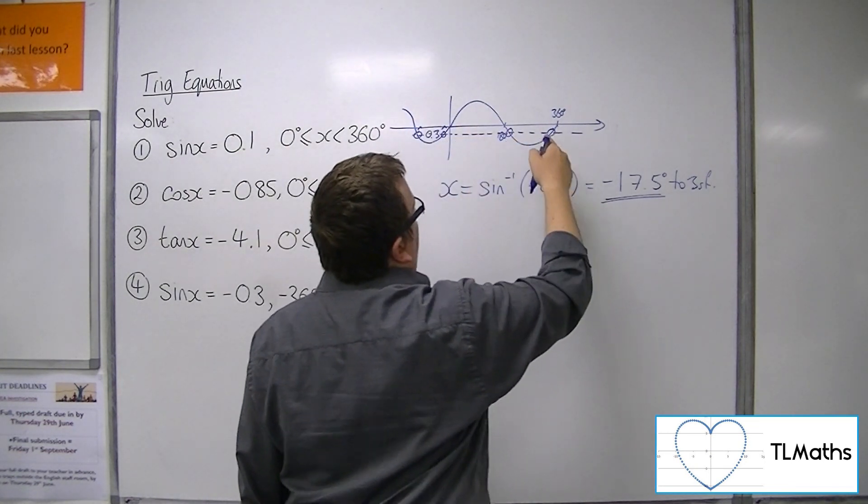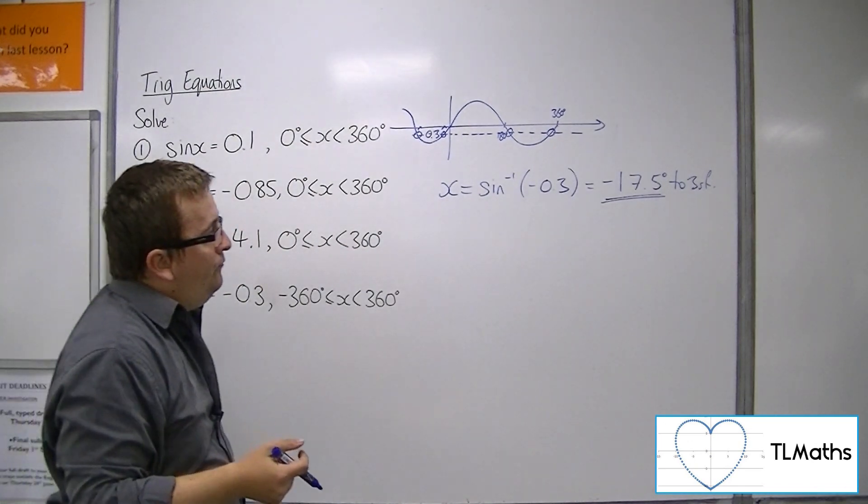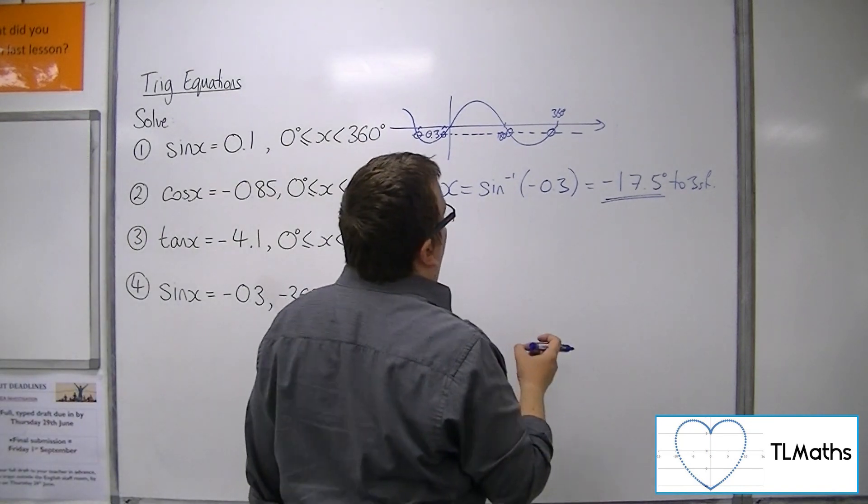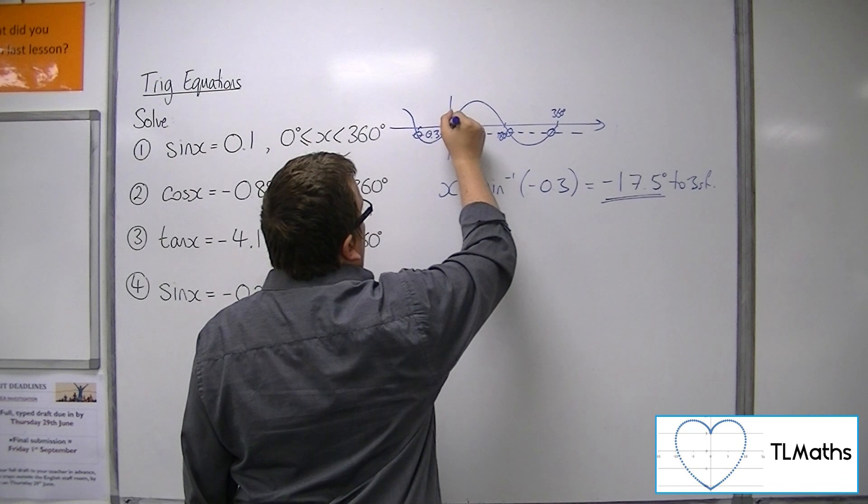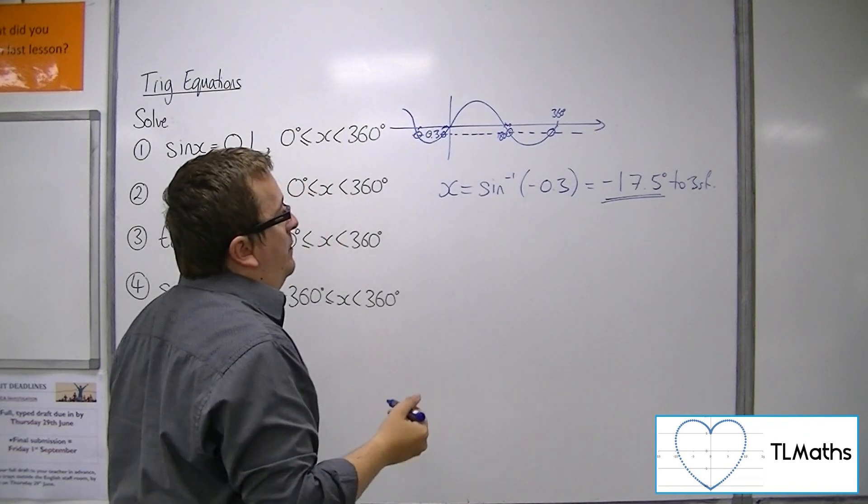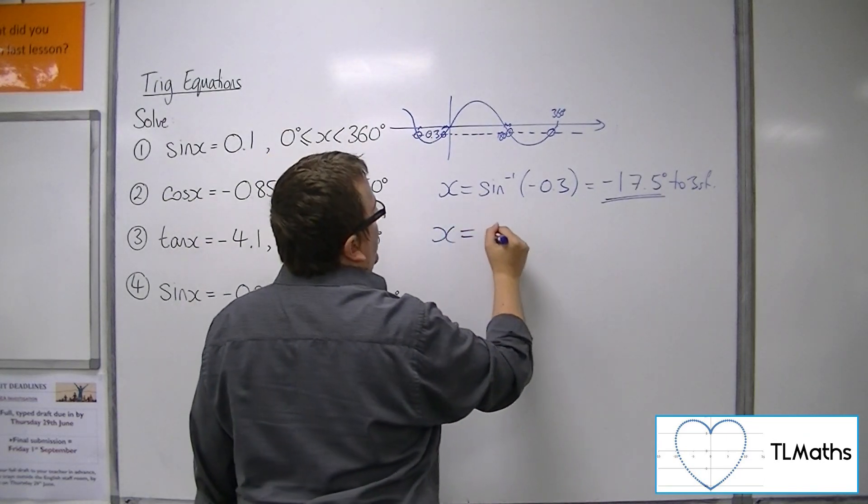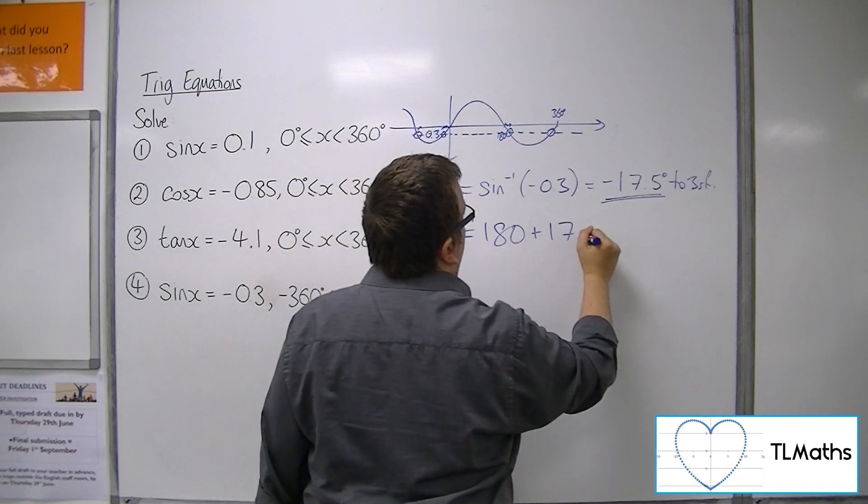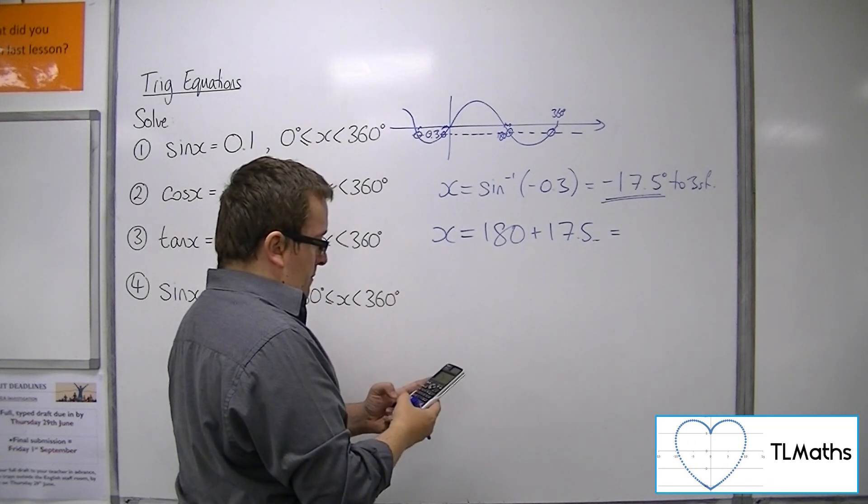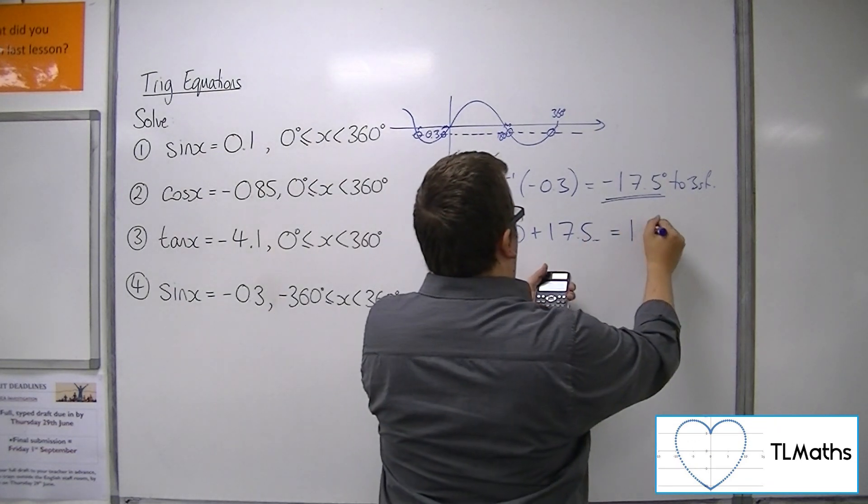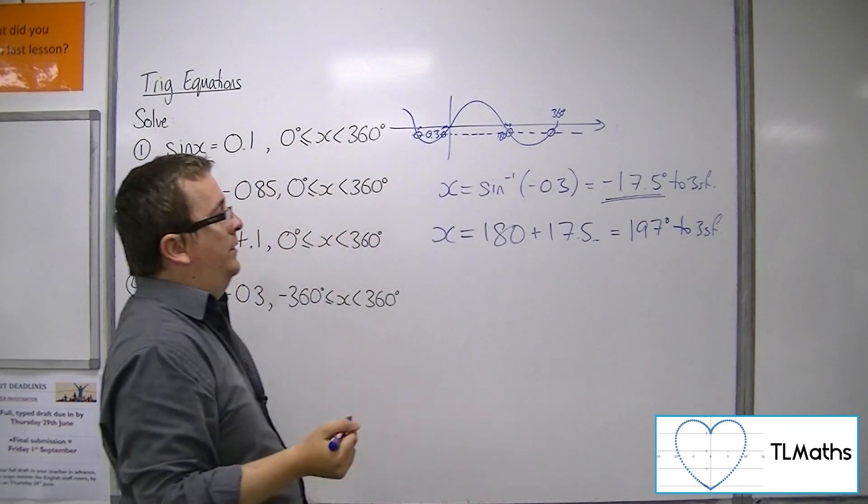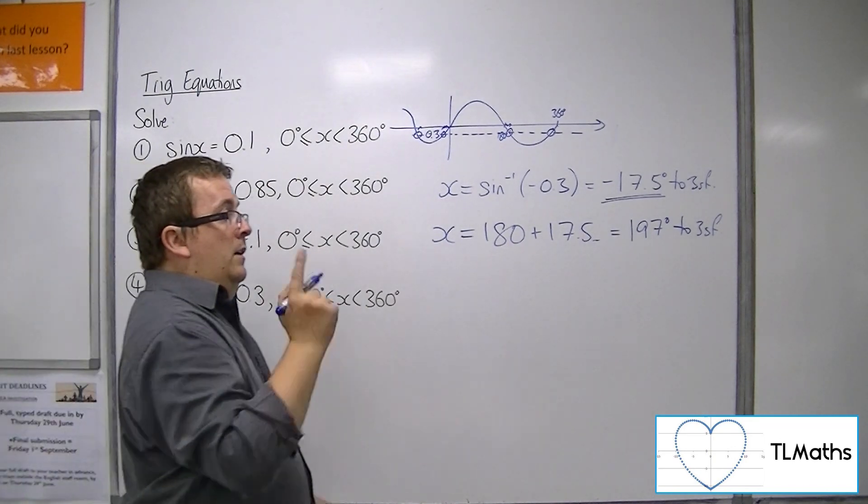So the other solution will be there, and there's one there, and there's one there. Now minus 17.5 degrees is a perfectly valid solution. That means that that distance there is 17.5, so that distance there is also 17.5. So I can add 180 to the 17.5. So times by minus 1, add 180, and we get 197 degrees to 3 significant figures.